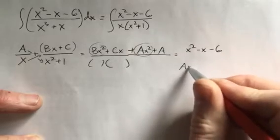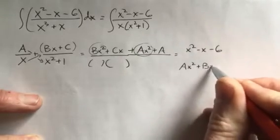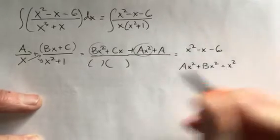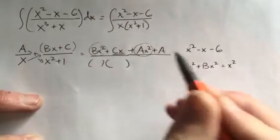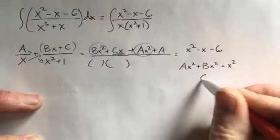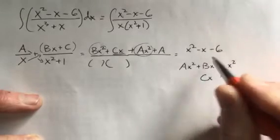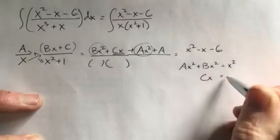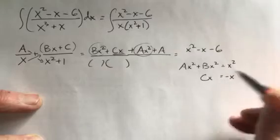And then this is the only constant term, and that's going to be equal to our only constant. A is equal to -6. That starts us off. When we cancel the x's, we get C = -1.